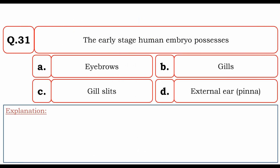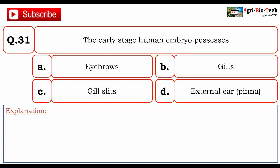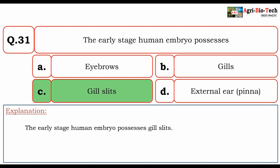First question: the early stage human embryo possesses — options are A) eyebrows, B) gills, C) gill slits, and D) external ear i.e. pinnae. The correct answer is C) gill slits. The early stage human embryo possesses gill slits.